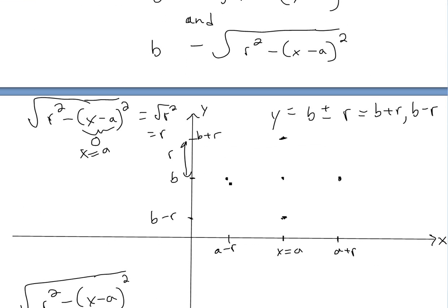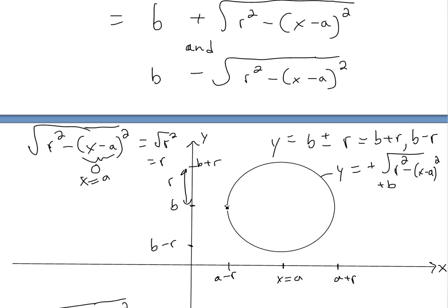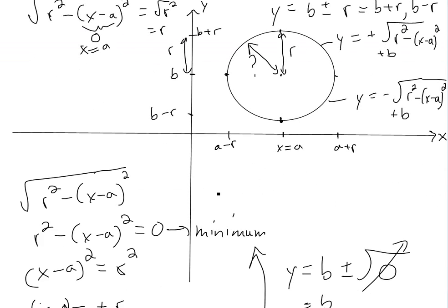The plus or minus basically signifies that this is just a semicircle. I redrew a better circle here — the top part is the positive semicircle, y equals positive square root of r squared minus x minus a squared plus b, and the bottom one is the negative semicircle, y equals negative square root of r squared minus x minus a squared, plus b. Now the question is: how do we know a random point on the circle is also distance r from the center?